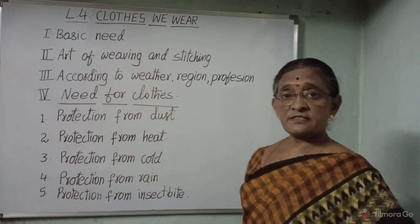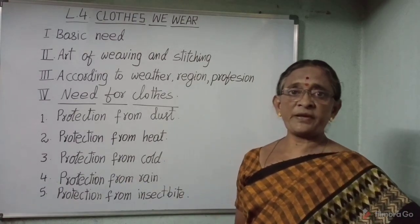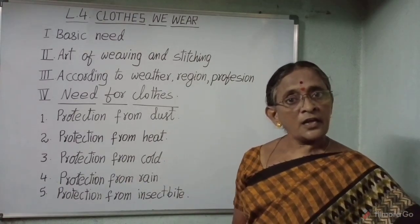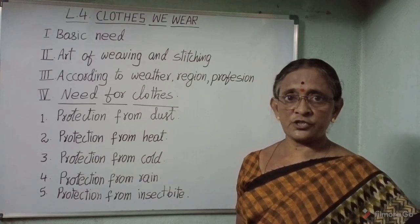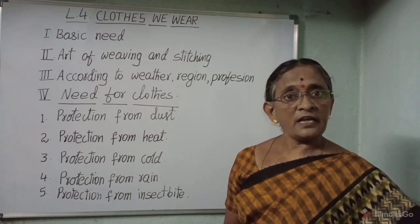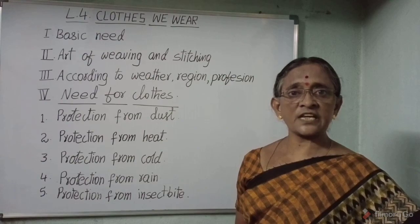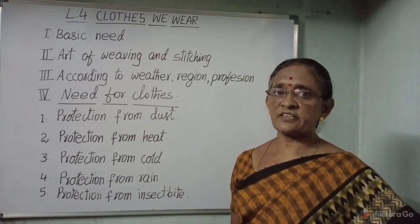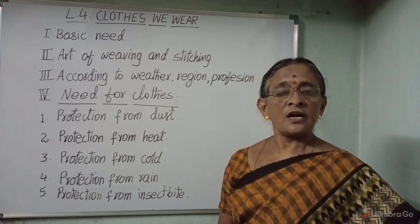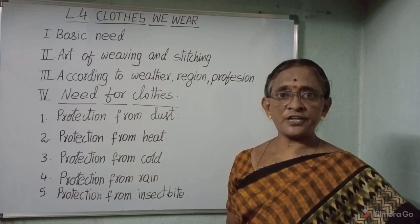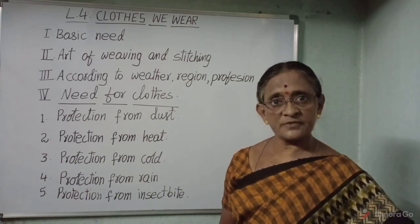Basic need. Clothes are our basic needs. The importance of clothes is next to food. Early humans used animal skin to cover their body. They also used leaves of trees and bark of trees to cover themselves.